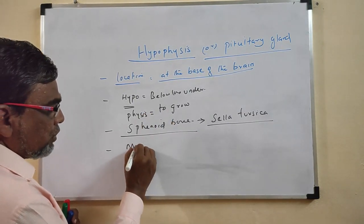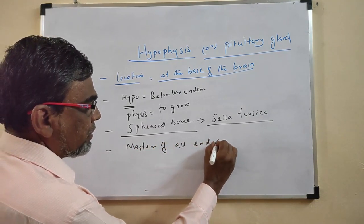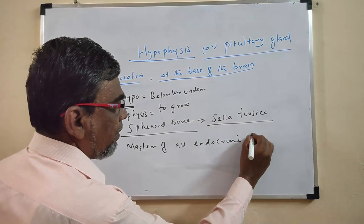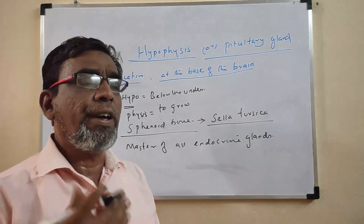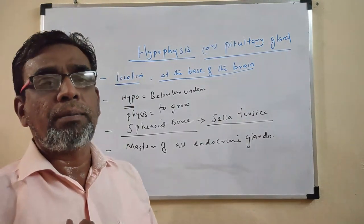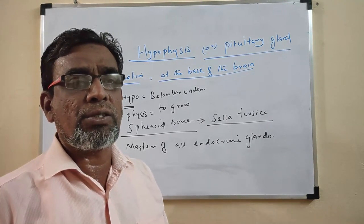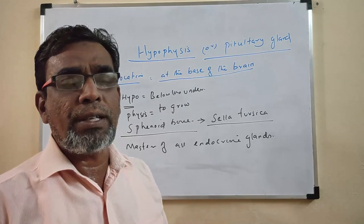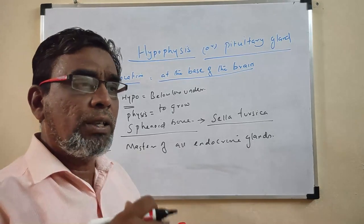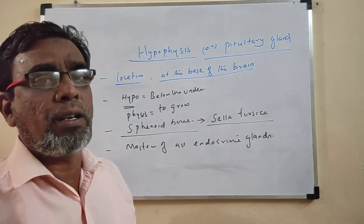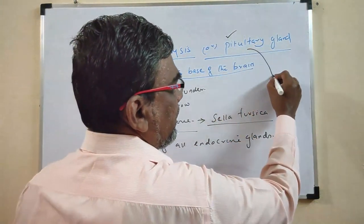This gland is called the master of all endocrine glands. Various glands exist — thyroid gland, adrenal gland, pancreas, thymus, testes, and ovaries — and all these glands are regulated and controlled by the pituitary. So it controls thyroid, adrenal, and pancreas, making it the master of all glands.